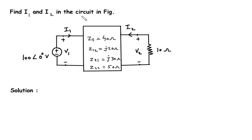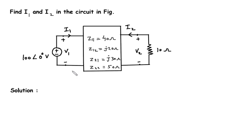Find I1 and I2 in the circuit in the figure. This is a two-port network and we have to find I1 and I2 of this two-port network. As we can see, the Z parameters for this two-port network are given.